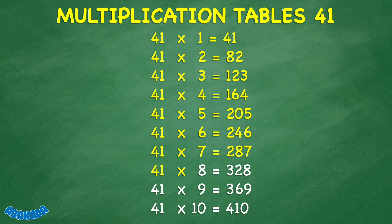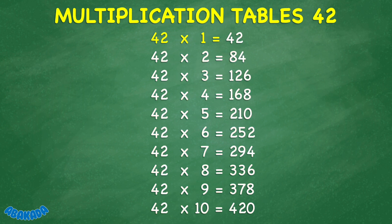41 times 8 equals 328. 41 times 9 equals 369. 41 times 10 equals 410. 42 times 1 equals 42. 42 times 2 equals 84. 42 times 3 equals 126. 42 times 4 equals 168. 42 times 5 equals 210.